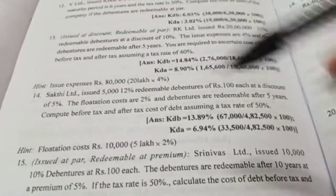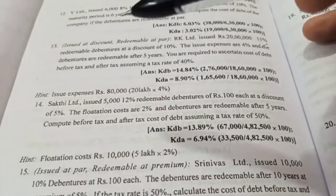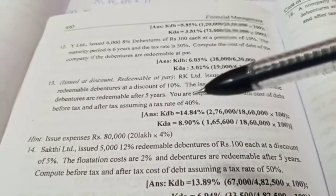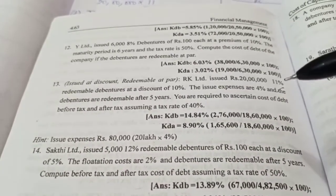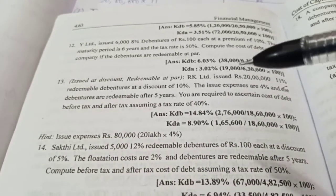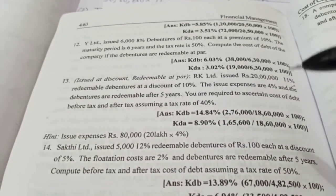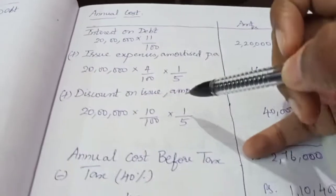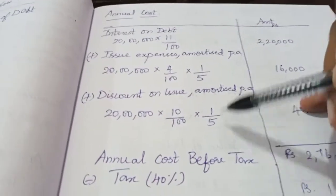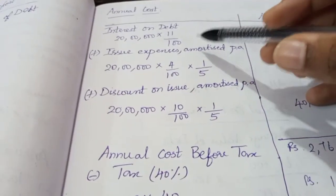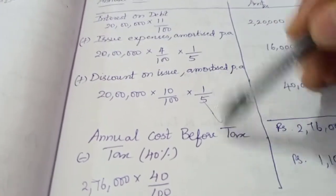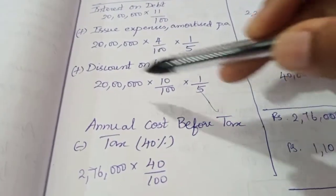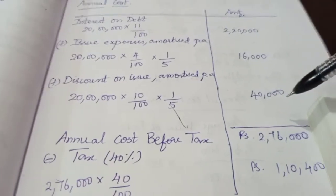Now we calculate the amount of discount on issue. The discount is 10%, so we take 10% of the face value of Rs. 20,00,000. Amortized over 5 years — that is 1 by 5 — we get 20,00,000 into 10% divided by 5, which gives us 40,000.